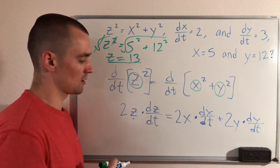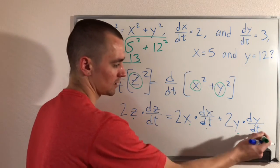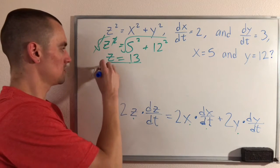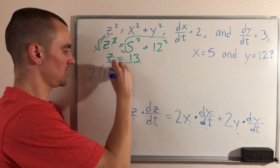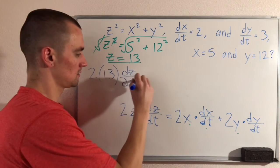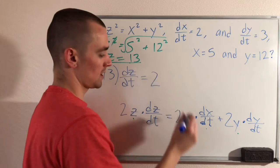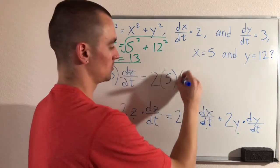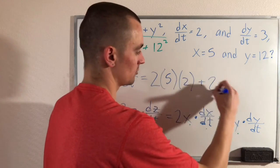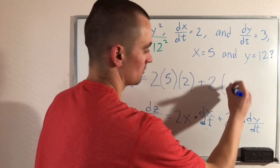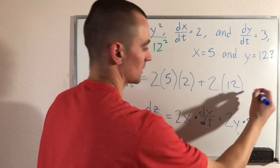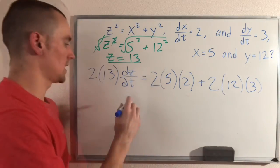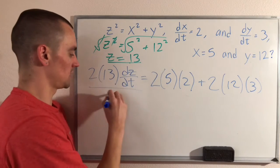So if we know z equals 13, we could then plug this in here, along with x, dx/dt, y, and dy/dt, and solve for dz/dt. So if we do that, we're going to get 2 times 13 times dz/dt equals 2x is 5. dx/dt is given as 2, and then 2y is given as 12, and dy/dt is given as 3. So plugging all that in, and then we can divide both sides by 2 times 13, which is 26.